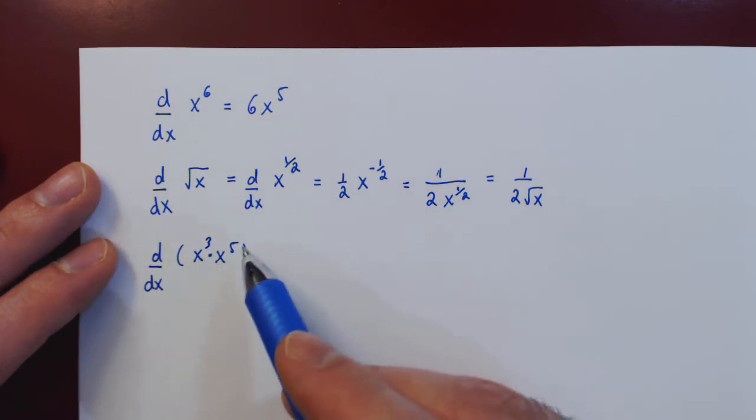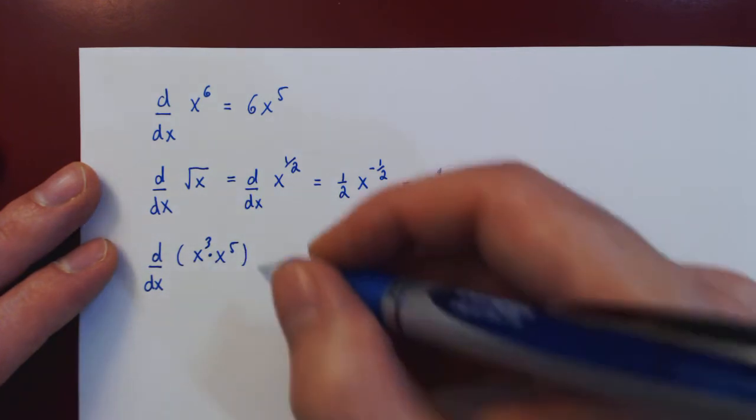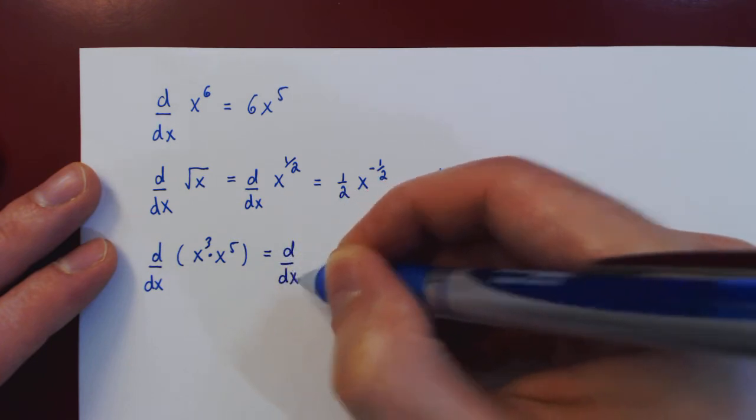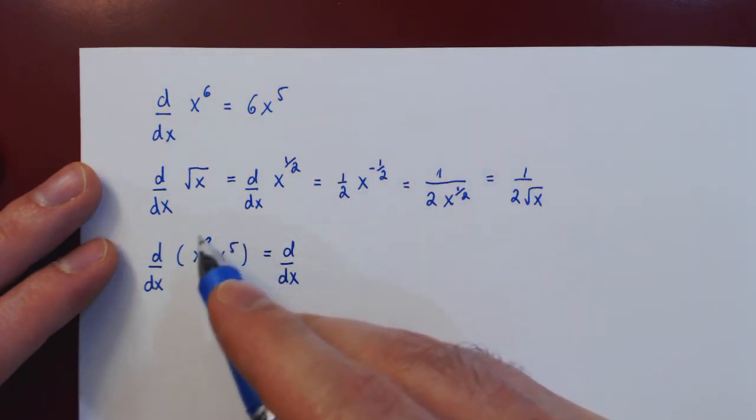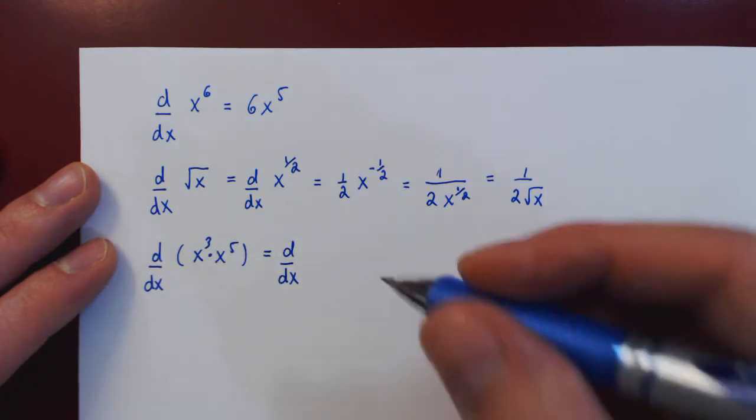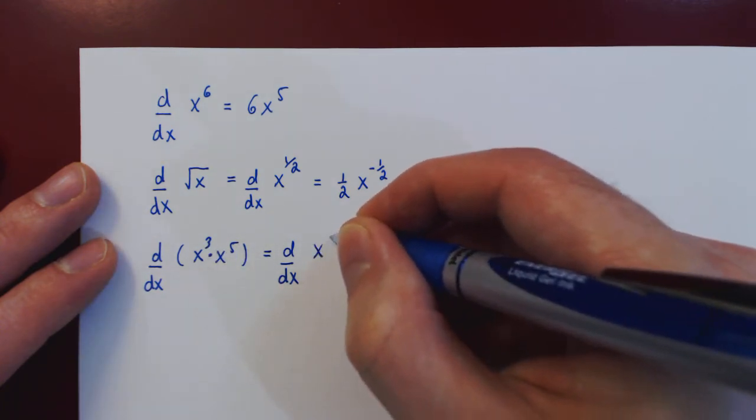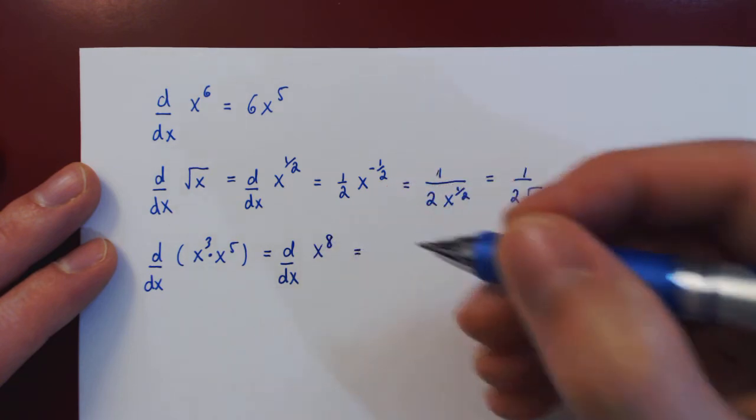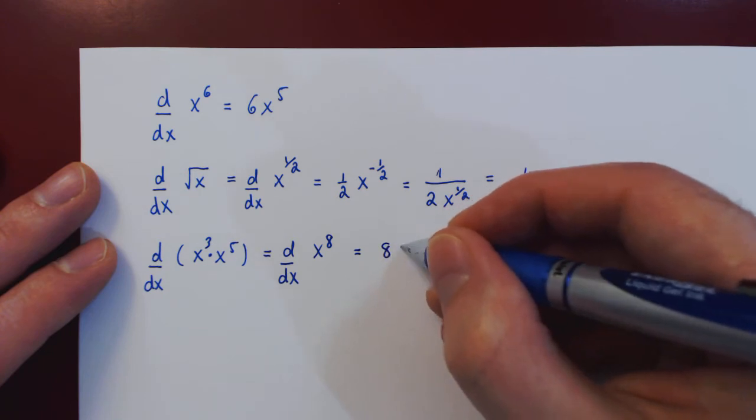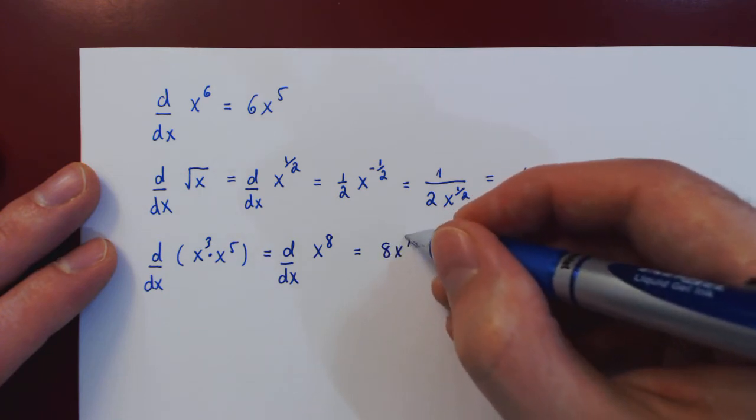And here we have two powers of x multiplied together. But, before we can differentiate, we can combine using property of exponents to a single power of x as x to the 3 plus 5, x to the 8. And now we have a single power of x, so by the power rule, the derivative is 8 x to the 8 minus 1, 7.